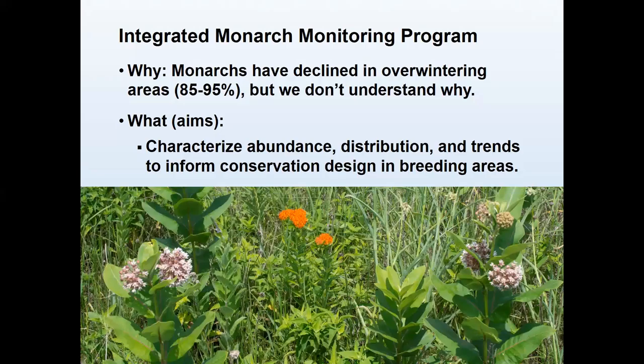The Integrated Monarch Monitoring Program was spawned by the Monarch Conservation Science Partnership to look at why monarchs are declining. We know from counts on the overwintering grounds where they congregate to hibernate — it's somewhat easier to count them there — but they've declined by 85% for the population that winters in Mexico, to about 95% for the population that winters in California, both over about 20-year time periods.